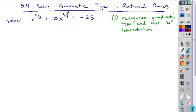So is our highest power double our other power? Is two-thirds double one-third? Yes. So we can let u equal the smaller of the two, x to the one-third. Therefore, u squared is going to be x to the two-thirds.